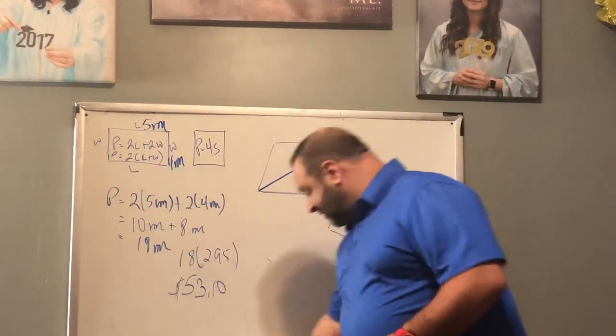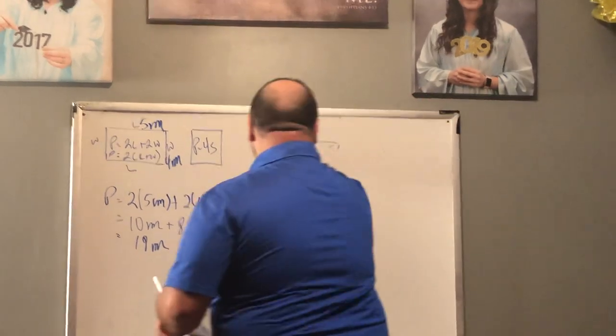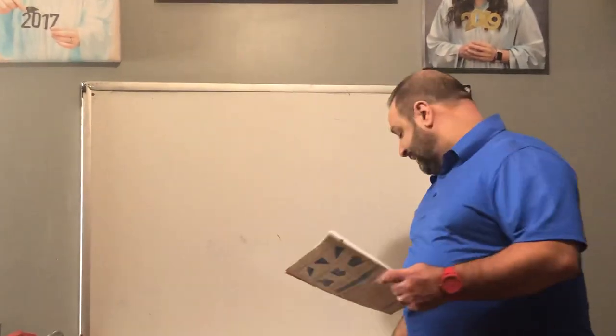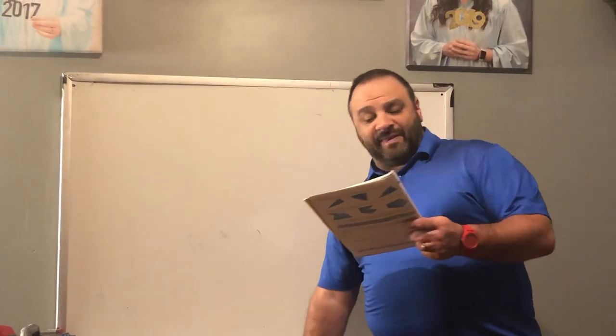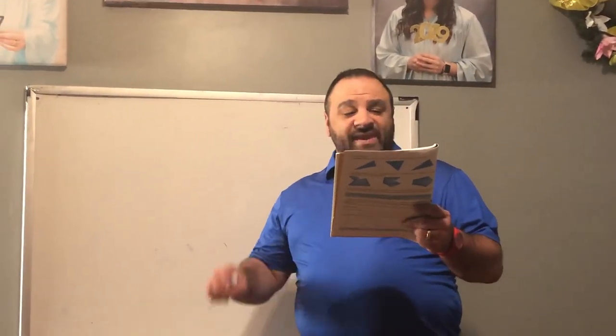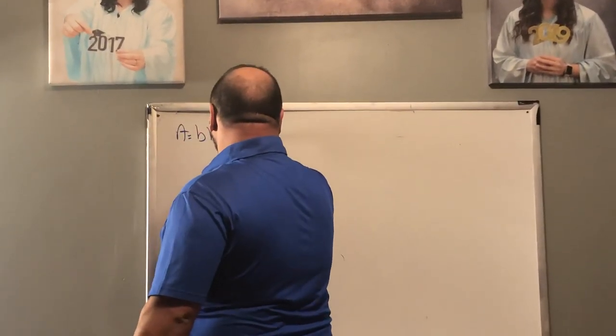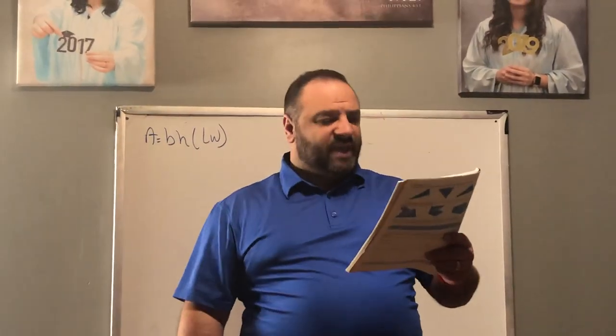Let's pick up on page four. Notice Postulate 31 and Theorem 98 — highlight both of these. Postulate 31: the area of a rectangle is the product of the length of the base and the length of the altitude to that base. You can use base times height, or equivalently, area equals length times width.